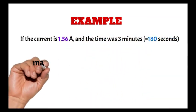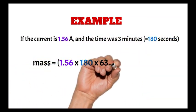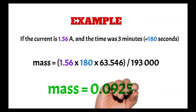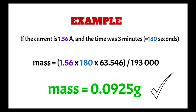So if you've got a current of 1.56 amps and your time is 3 minutes, which is 180 seconds, just put this into your equation and you'll get a mass of 0.0925 grams. Three significant figures is all you need.